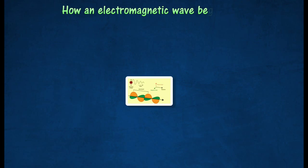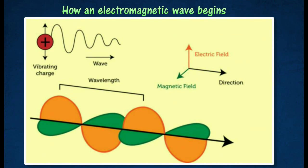The following diagram shows how an electromagnetic wave begins. A vibrating charged particle causes the electric fields surrounding it to vibrate as well. A vibrating electric field, in turn, creates a vibrating magnetic field. The two types of vibrating fields combine to create an electromagnetic wave.